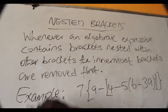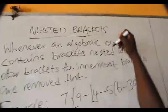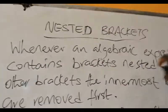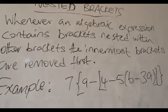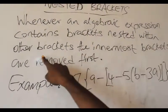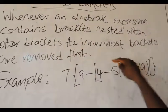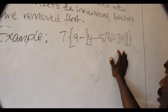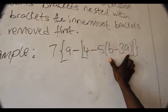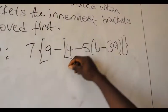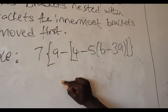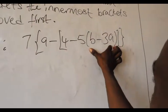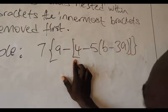We are looking at nested brackets. Whenever an algebraic expression contains brackets nested within other brackets, the innermost brackets are removed first. For example, if we look at this expression, we see that we have this bracket within these two other brackets. We want to solve this problem by removing the innermost bracket first, followed by the next one, then the outermost.